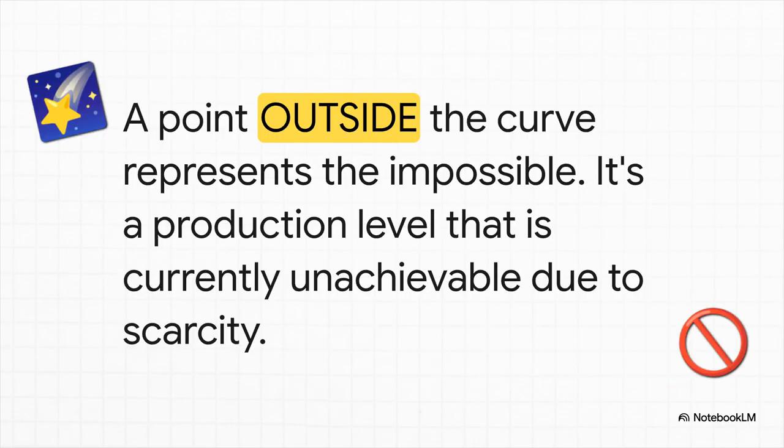So then what about a point outside the curve? Well, that's our dream world, isn't it? It represents a level of production that is simply impossible to achieve with the current resources and technology we have. That point is the visual reminder of that harsh reality of scarcity we talked about at the beginning.